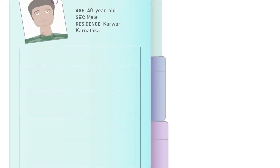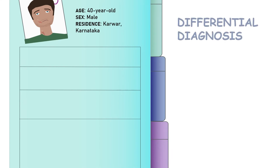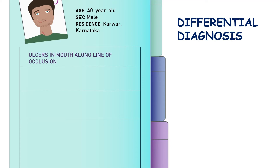Let's see the points we have picked up from this long scenario to lead us to a differential and then to a definitive diagnosis. Ulcers along the line of occlusion brings you to your first differential of traumatic ulcers.